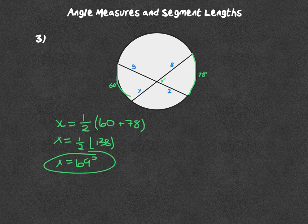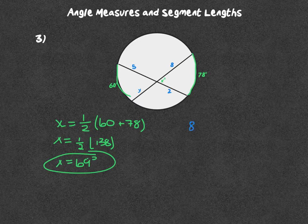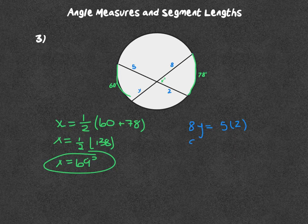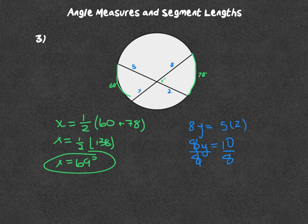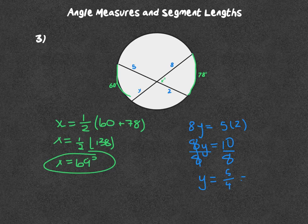The next one we are trying to find Y, and that's dealing with the segment lengths. For this one we multiply the two segment parts and then set them equal. That would be 8 times Y equals 5 times 2. 8 times Y equals 10, and then you divide by the 8, and Y equals 5 fourths or 1.25, either one.